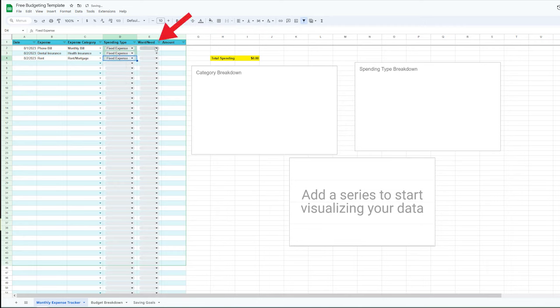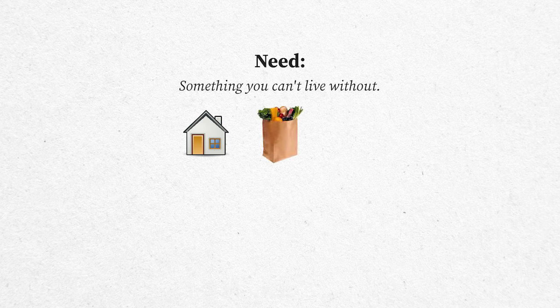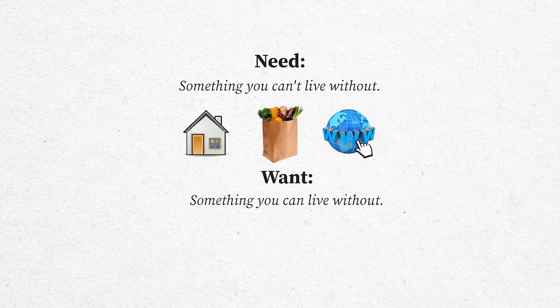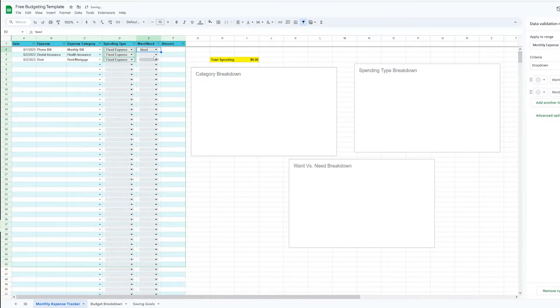The fifth column is Want or Need, where you categorize whether the spending is a need or a want. A need is something you can't live without, like rent, groceries, and internet. A want is something you can live without, like coffee, Netflix, and travel. This is a very subjective section where you have to analyze your own life and decide. But if I look at those three expenses — phone bill, dental insurance, and rent — I would say they're all needs.